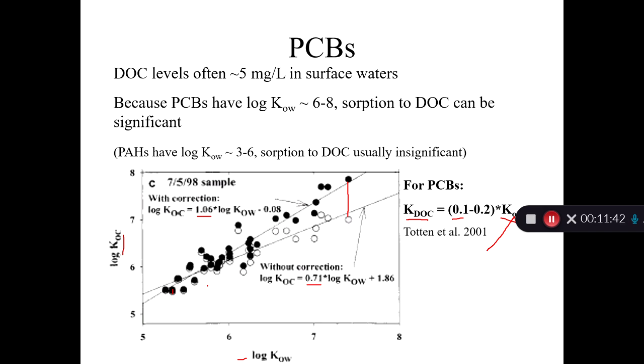And this is important because one of the main removal processes for PCBs in the water column is to volatilize out into the air. So PCBs that are sticking to that dissolved organic carbon are not volatilizing. And so we need to get a good handle on that to be able to predict the fate of these chemicals.